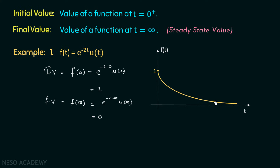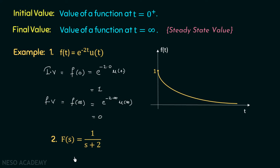It is very easy to find the initial and final values of a function in the time domain. But if the function is in the frequency domain, like F(s) equal to 1 over s plus 2, we would need to take its inverse Laplace transform to convert it to time domain and then evaluate at t equal to 0 plus and t equal to infinity. Instead of doing that, we use the initial and final value theorems, which are properties of the Laplace transform that allow us to find these values directly in the s domain.